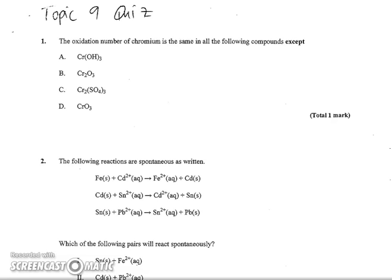Number one asks, the oxidation number of chromium is the same in all the following compounds except. Looking at this, we know that OH has a minus 1 charge. You could pull that off your common ion chart, otherwise you know that oxygen is minus 2 and hydrogen is plus 1, so overall hydroxide has a minus 1. There's three of them, so that's a minus 3 charge. You only have one chromium, so chromium is going to have to be a plus 3.